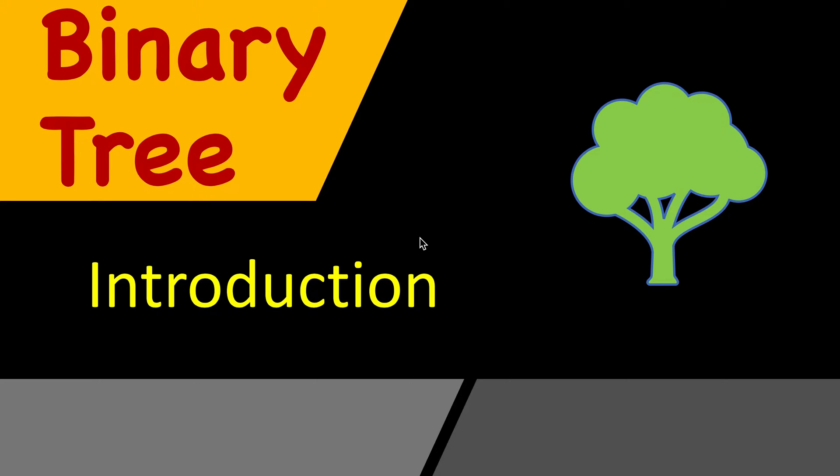In our previous video we had seen what is a tree data structure and why it is so important. Now we will start modifying our tree and we will call it binary tree, and it's clear from the name binary means two. So what is the importance of two here in this tree?